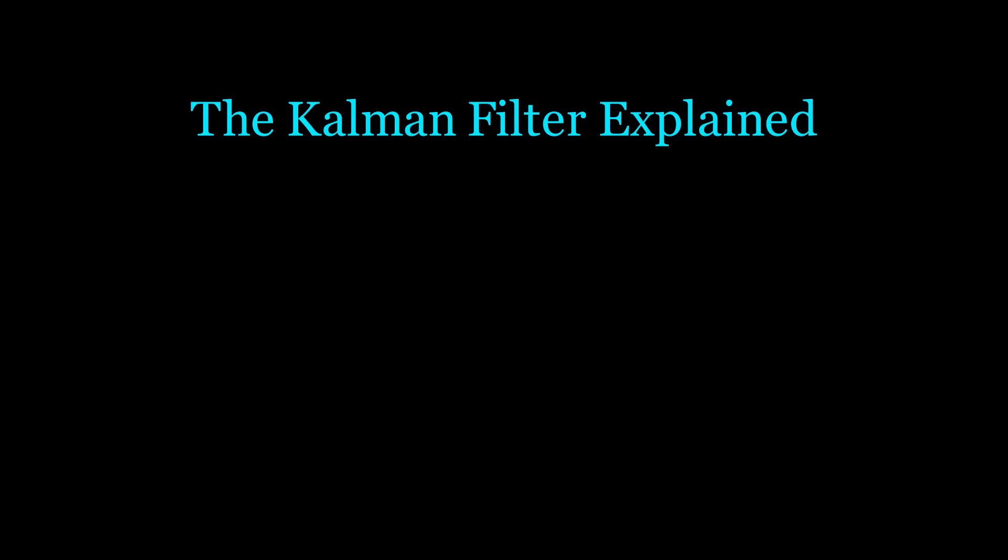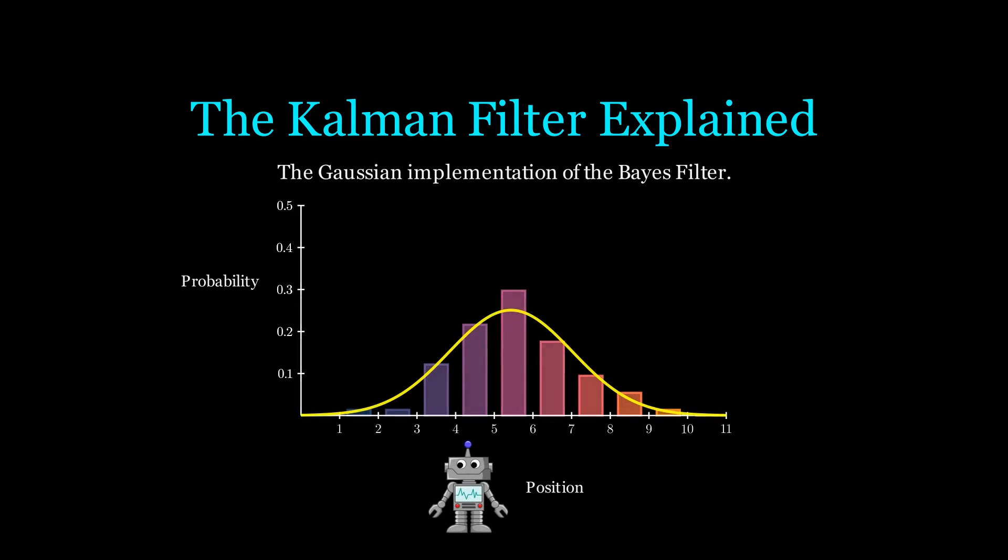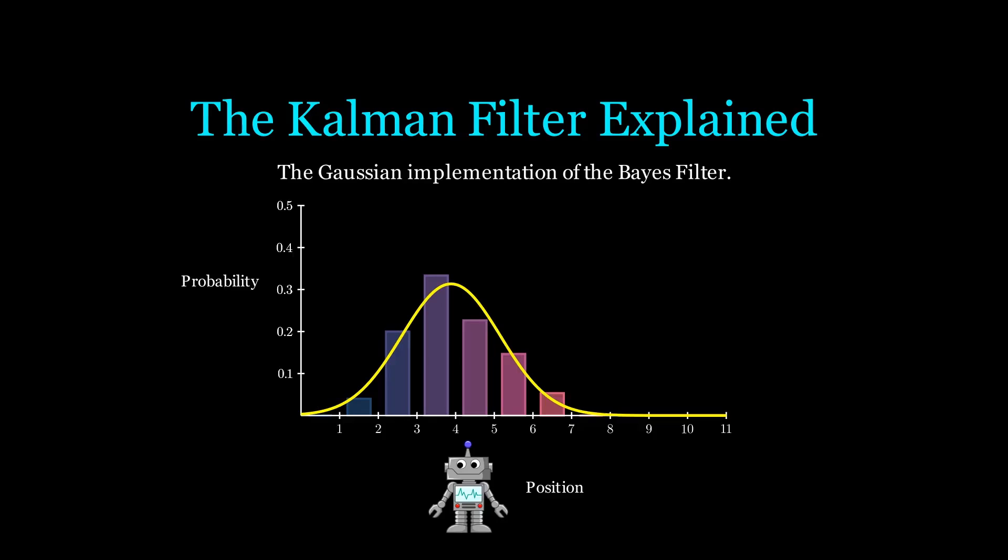Welcome. The Kalman filter is probably the most famous implementation of the Bayes filter. This is because the Kalman filter is incredibly powerful due to its optimality, computational efficiency, and its adaptability to various problems. In this video, we'll cover the key aspects of the traditional Kalman filter and how it's derived from the Bayes filter.